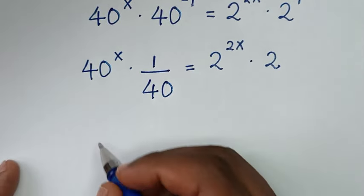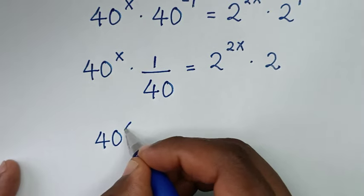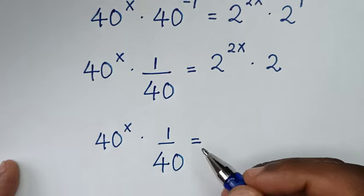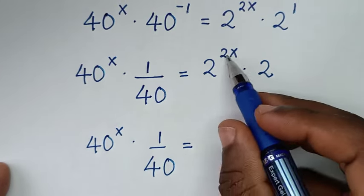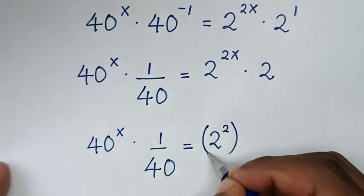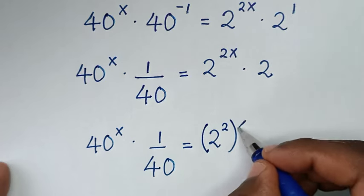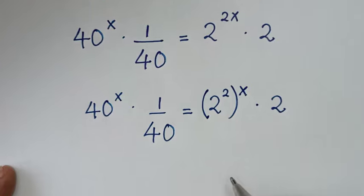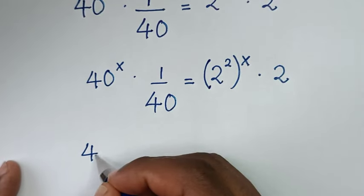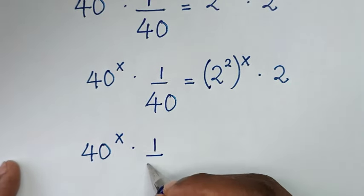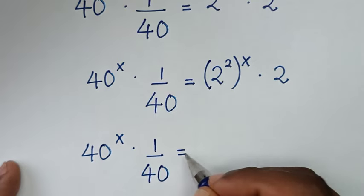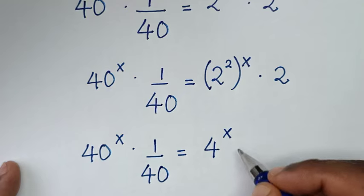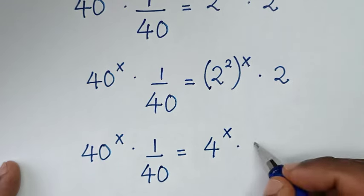Then in the next step, it will be 40 power of x times 1 over 40 is equal to 2 power of 2 taken inside the bracket with power of x outside the bracket, then times 2. Since 2 power of 2 is 4, it becomes 4 power of x times 2.